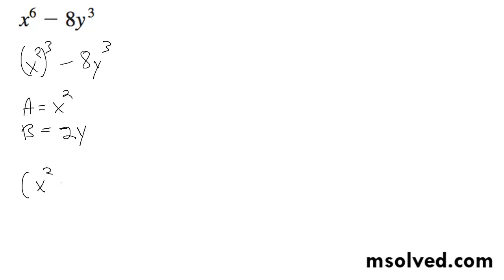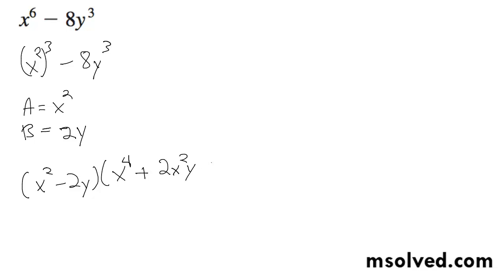So we get x squared minus 2y, and then we get x squared squared, which is x to the fourth, plus 2x squared y, and then finally plus 4y squared. And that's it.